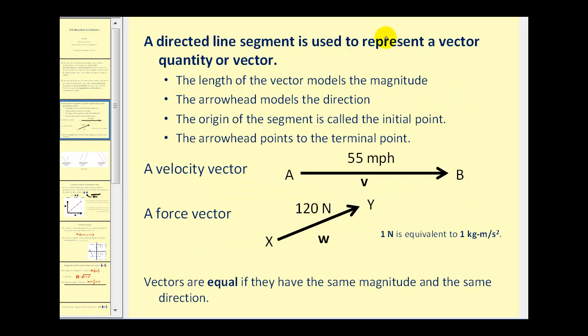A directed line segment is used to represent a vector quantity. The length of the vector models the magnitude. The arrowhead models the direction. The origin of the segment is called the initial point, and the arrowhead points to the terminal point. Here we have a velocity vector with initial point A, terminal point B.